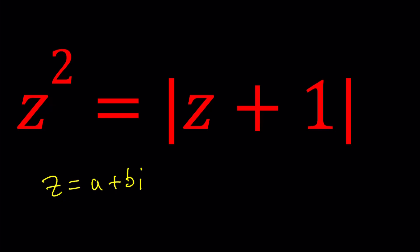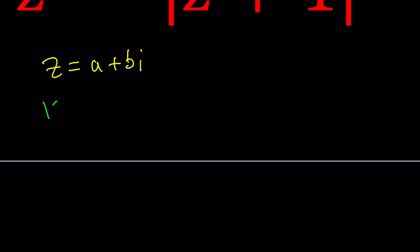One of the questions I want to pose is: can Z be real? Something to think about. I'll be presenting two methods, and let's start with the first one. For method one, I'm going to use the equality Z equals A plus B I and set Z equal to that everywhere.